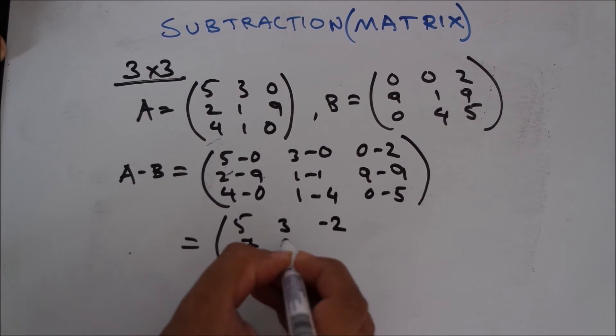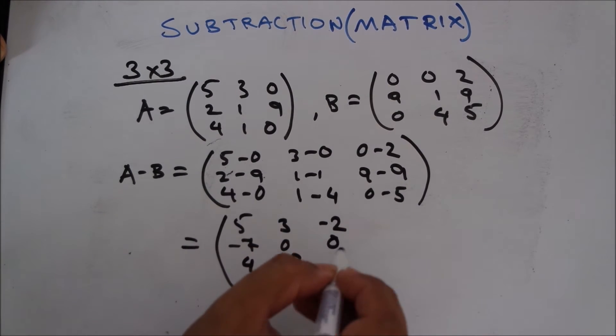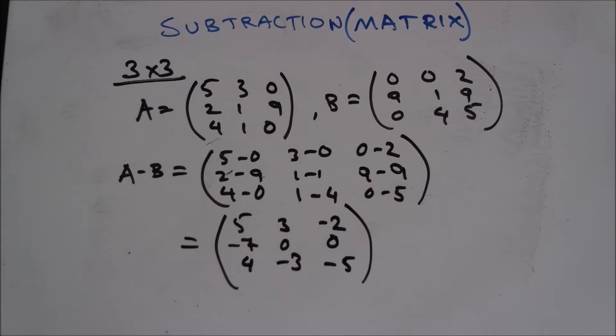The result will be 5, 3, minus 2, minus 7, 0, 0, 4, minus 3, minus 5. So that's about it for addition and subtraction of a matrix. I hope you have a clear concept of both, for both 2 into 2 and 3 into 3 matrix. So I'll be moving on to the multiplication of matrix now.